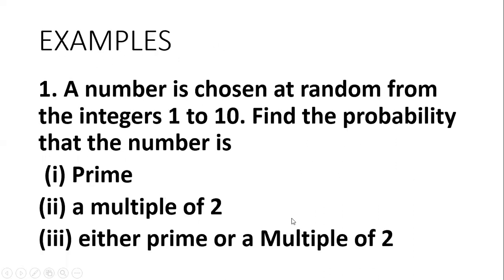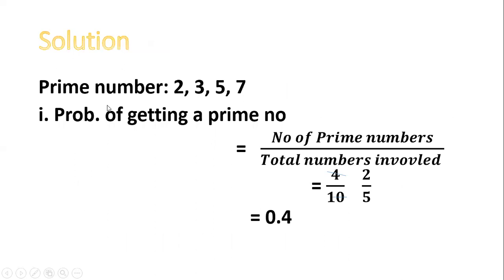Let's take a few examples. Number one: a number is chosen at random from the integers 1 to 10. Find the probability that the number is: one, prime; two, a multiple of two; and three, either a prime or a multiple of two. The first thing is to list the prime numbers between 1 and 10. Those are 2, 3, 5, and 7 — so we have four possible outcomes. The probability of getting a prime number is four over ten.